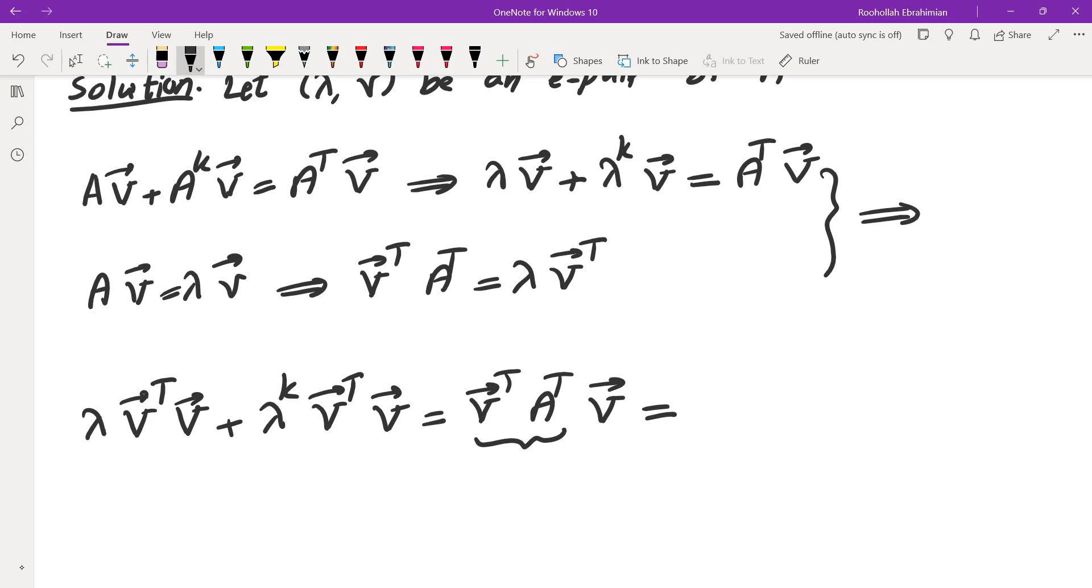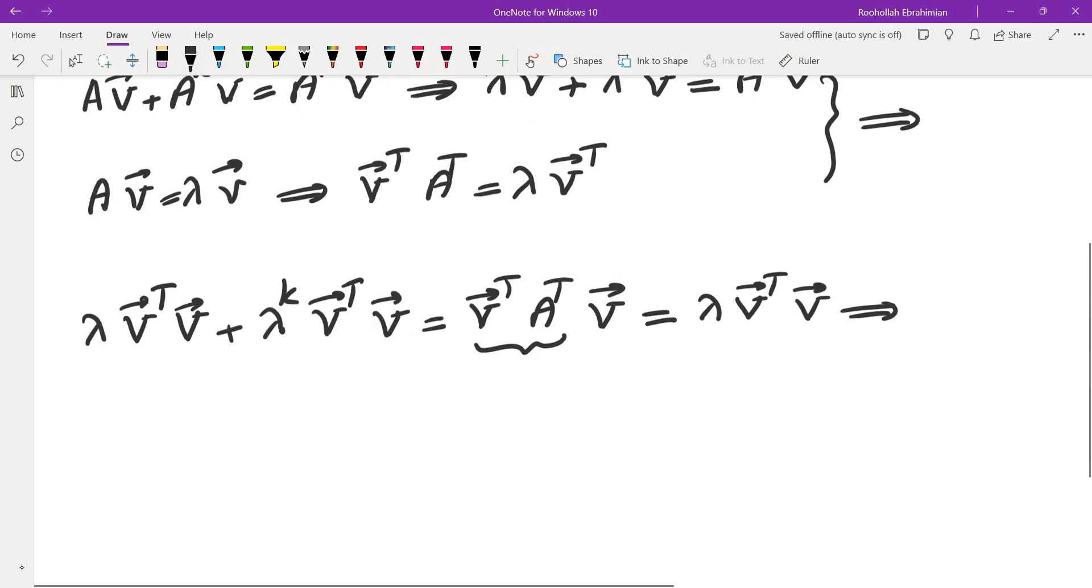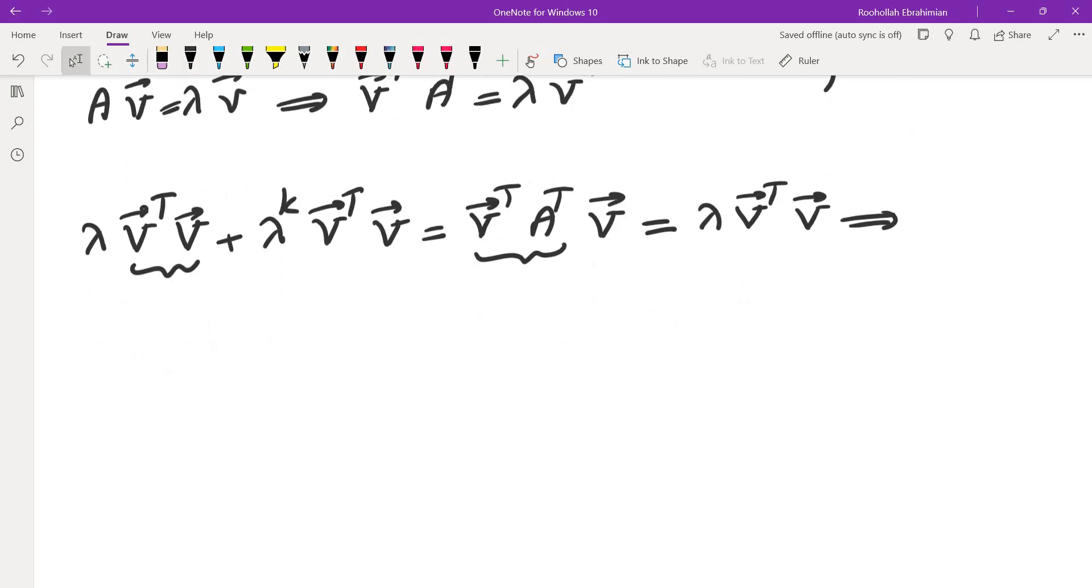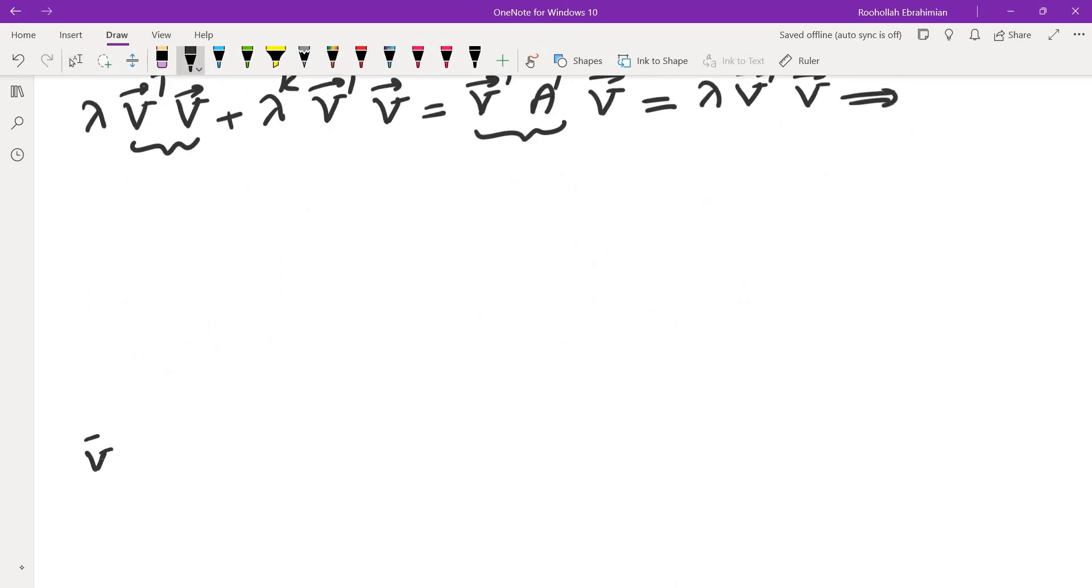Now, the one on the left of V is equal to lambda V transpose V. If we look at this one, if you take a vector and multiply by its transpose, so if V is a vector X1 through Xn and multiplied by V transpose, which is like this, you get V transpose X1 through Xn.